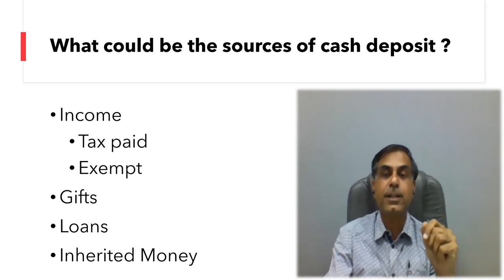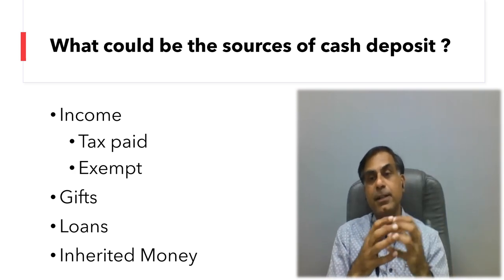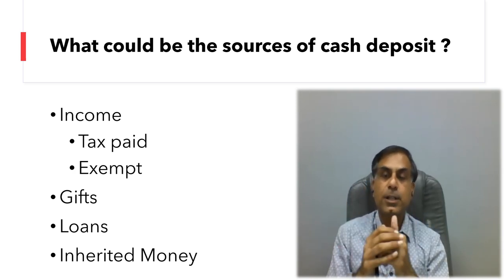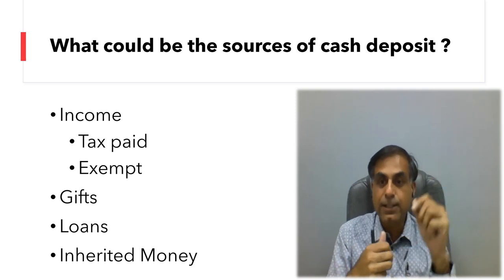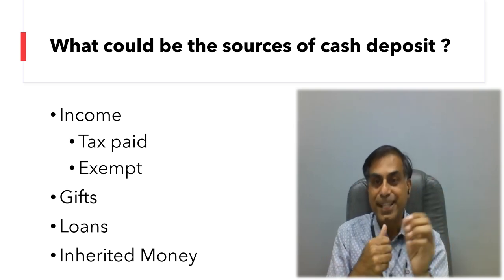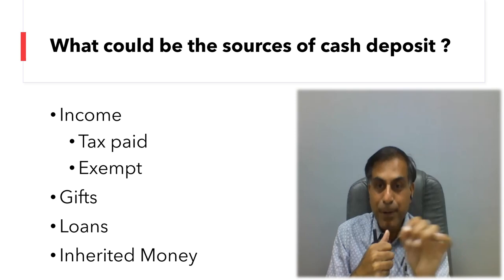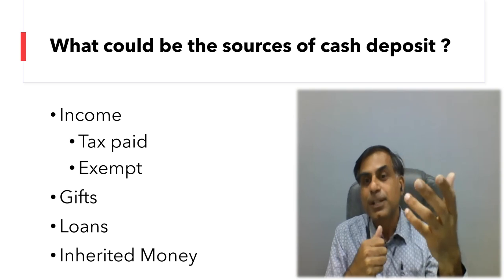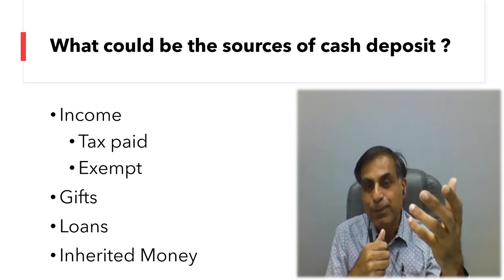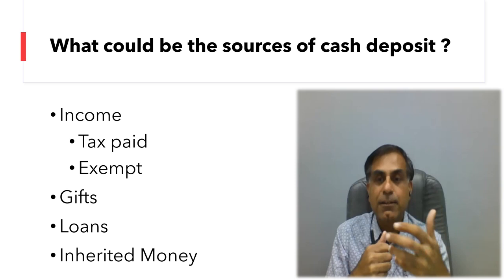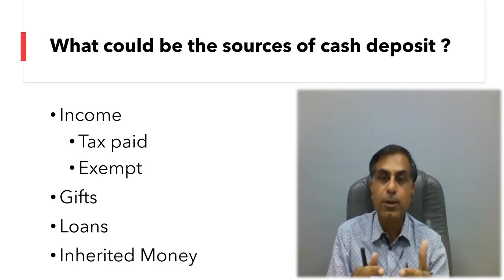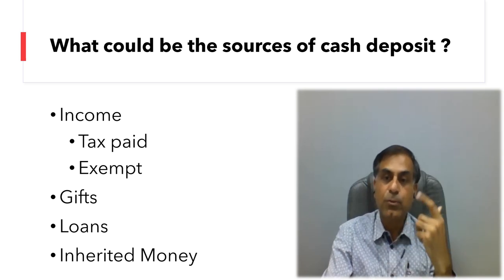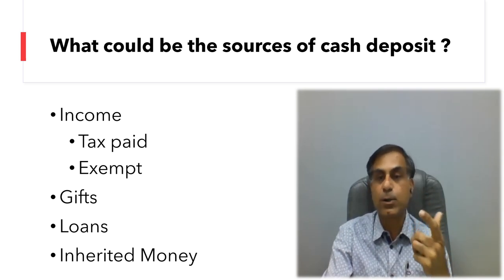Then comes the question of inherited money. Can you say that you have inherited cash from your father or other relative and deposited that in the bank? You can do so. But whether there is a will by the person saying, 'I am by way of will giving so much cash to person X post my death' — these kinds of documents are very hard to achieve. If you are not able to prove that, your logic may not be accepted by the department and the same amount deposited in cash in your bank account would be added to your income.